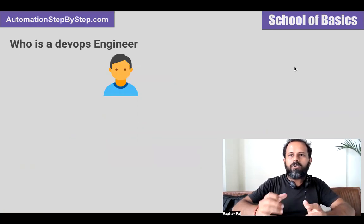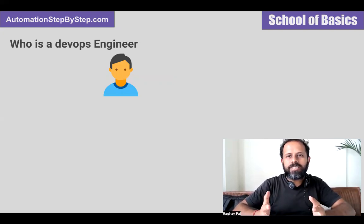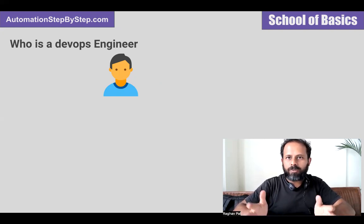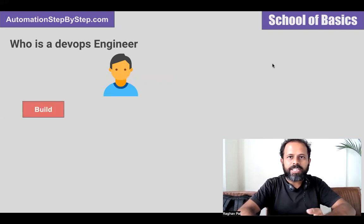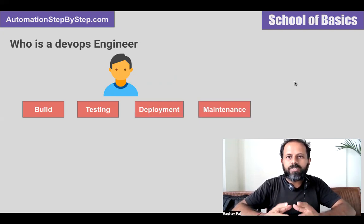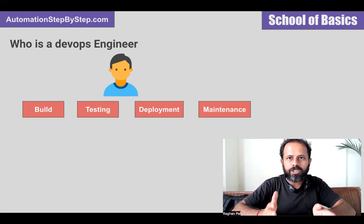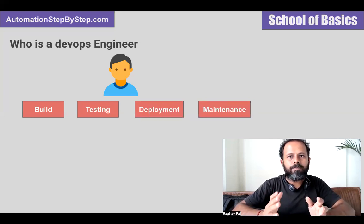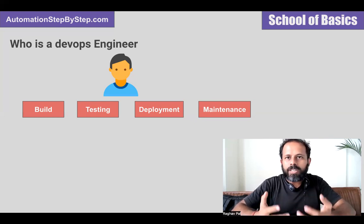Today we are going to focus on who is a DevOps engineer and how you can become one. Generally, a DevOps engineer is a person who has visibility in all the stages and all the phases of a project. In any typical project we start with planning, then we have the build stage, the testing phase, the deployment stage, and the maintenance and monitoring stage. A DevOps engineer will have visibility in all these stages.